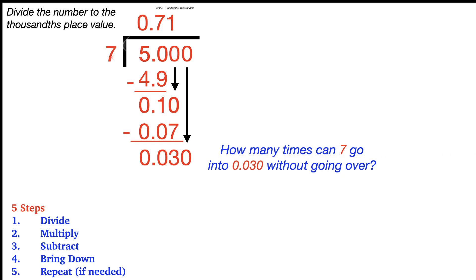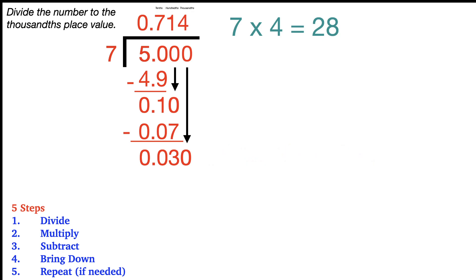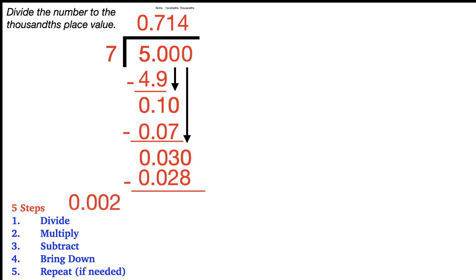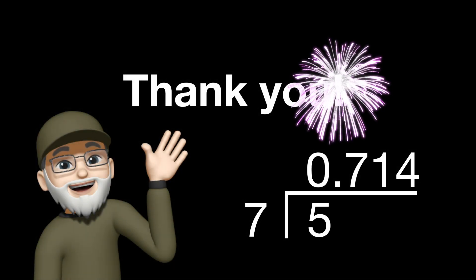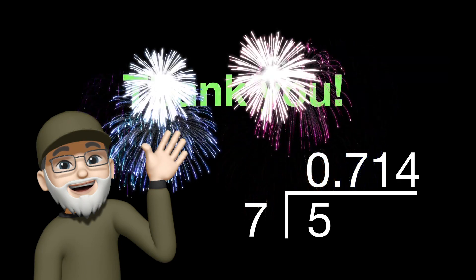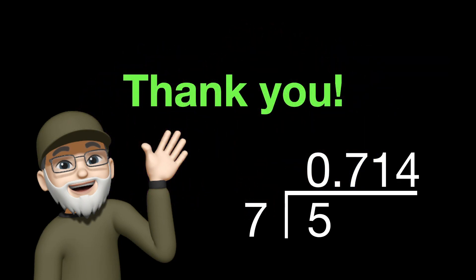We're going to divide again. Ask yourself how many times does seven go into thirty thousandths without going over? That would be four times, because seven times four — the four goes at the top in the thousandths — is equal to twenty-eight, but we express that as twenty-eight thousandths. Thirty thousandths minus twenty-eight thousandths would be two thousandths. But we do not need to go any further, because we're only working to the thousandths place value. Our final answer is seven hundred fourteen thousandths. If you've made it this far, great job. Thanks for sticking it out. Keep working on your division skills, and we hope to see you on the next one.